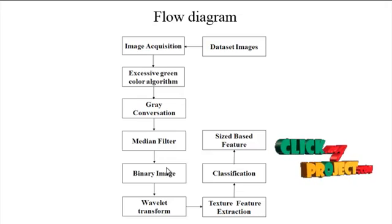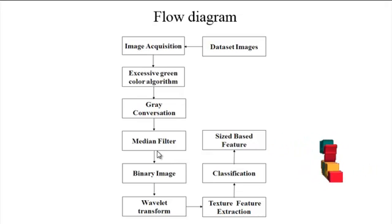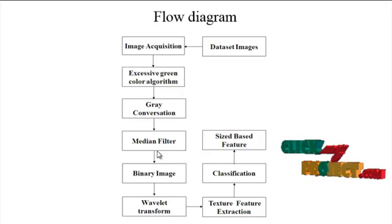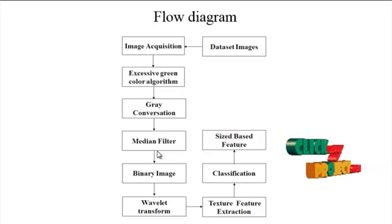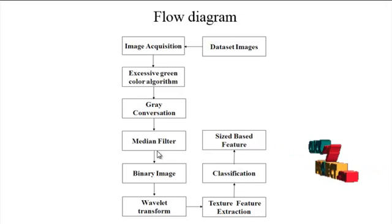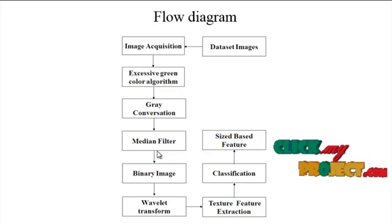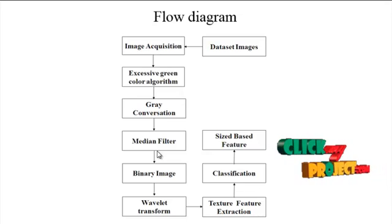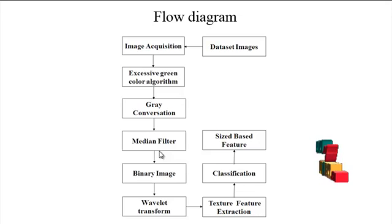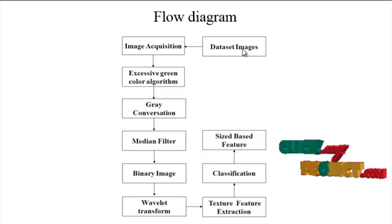More or less all of the process is converted using the grayscale version. Finally, it classifies what type of weed and what type of crop is present. This analysis is necessary because the overall process should be easily detected. These are the overall flow diagram steps of the process.